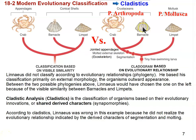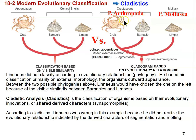Barnacles attach themselves to all kinds of things and they feed by sending out their appendages called cirri out into the water. They capture little food particles and bring them in and feed on them with those appendages. If you look closely at those appendages, they look very similar to the appendages of other arthropods — in other words, they are jointed and they are covered with an exoskeleton.